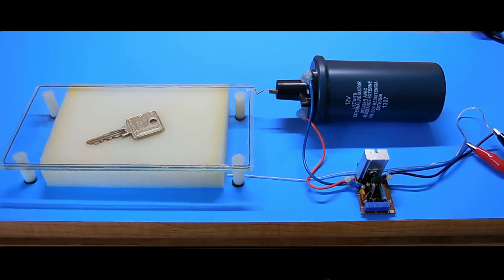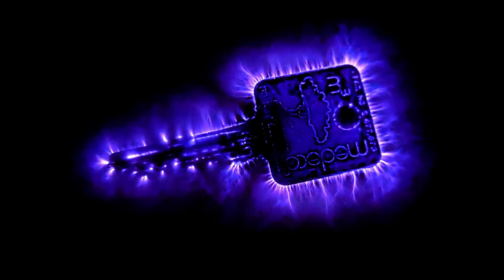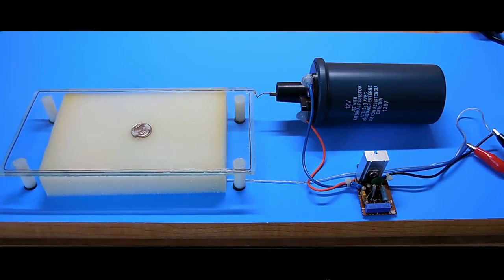The next object is a key. Now we're going to take a look at a U.S. dime.